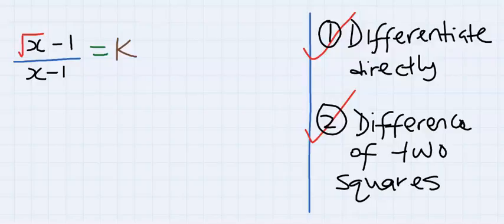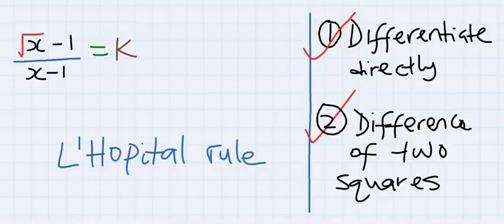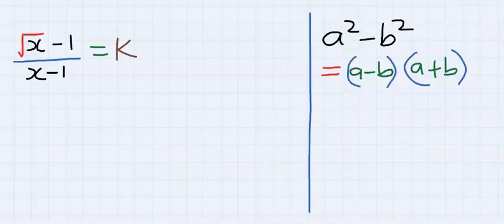You can also consider applying the operator rule in using limits which we are going to consider in another video. In difference of two squares, a squared minus b squared is equal to (a minus b)(a plus b). This is difference of two squares.